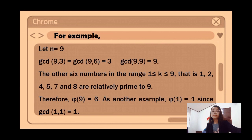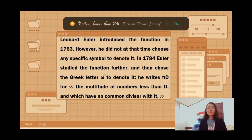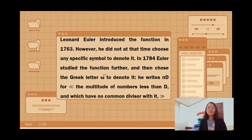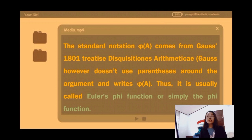Leonhard Euler introduced the function in 1763. However, he did not at that time choose any specific symbol to denote it. In 1784, Euler studied the function further and chose the Greek letter phi to denote it. He wrote this symbol for the multitude of numbers less than d and which have no common divisor with it. The standard notation, phi(a), comes from Gauss's 1801 treatise.